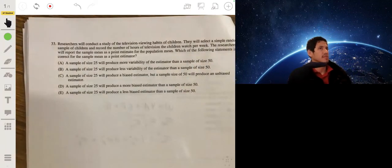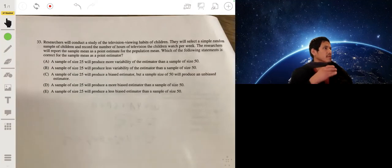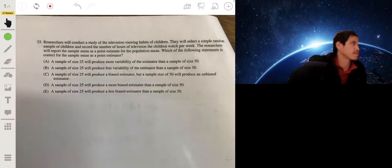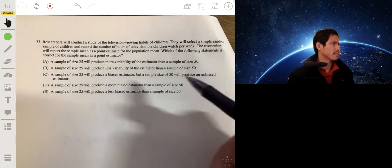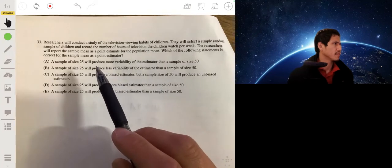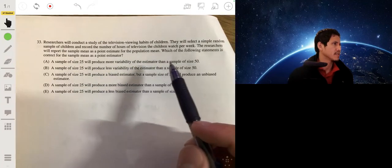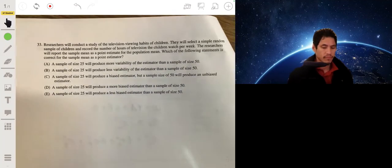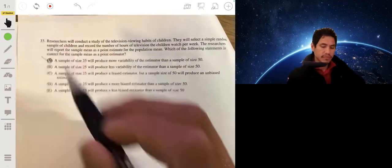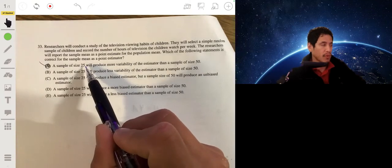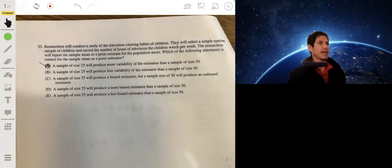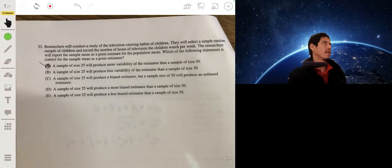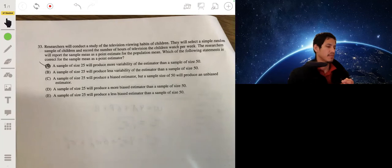Researchers will conduct a study of television viewing habits of children. They will select a simple random sample of children and report the hours of television. The researchers will report the sample mean as a point estimate of the population. Which of the following statements is correct for the sample mean? Alright, so a sample of size 25 will produce more variability that's better than a sample of size 50. Smaller sample, yeah I mean that's correct. Remember, the more data we have, the more precise our estimates will be. So when we say there's more variability, more variability means like you can have a larger range of values for estimating something.